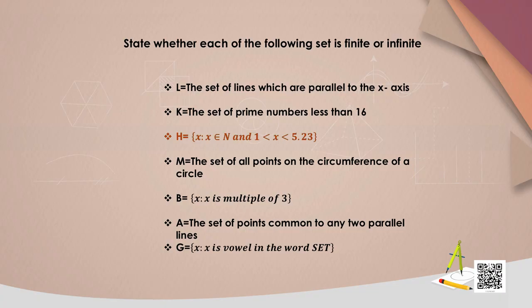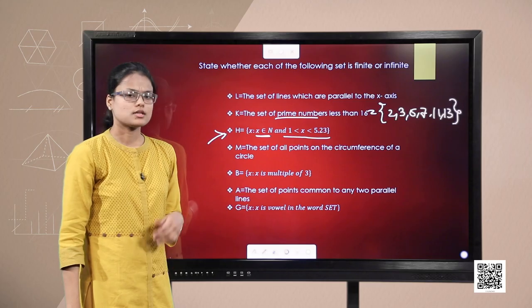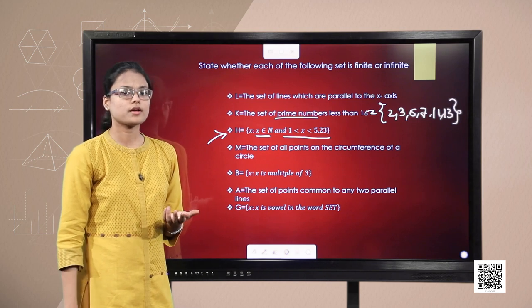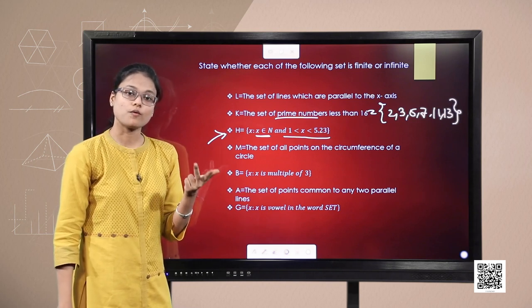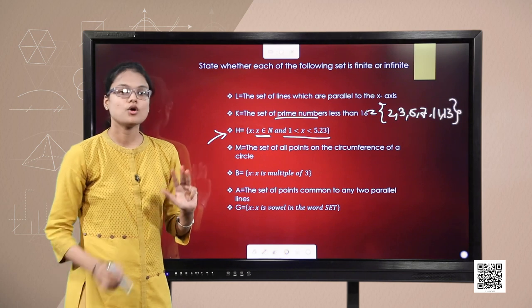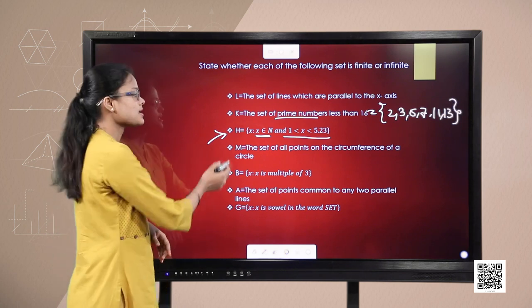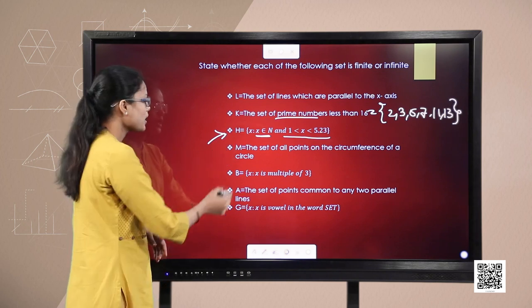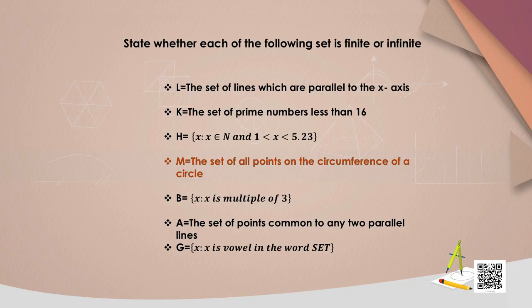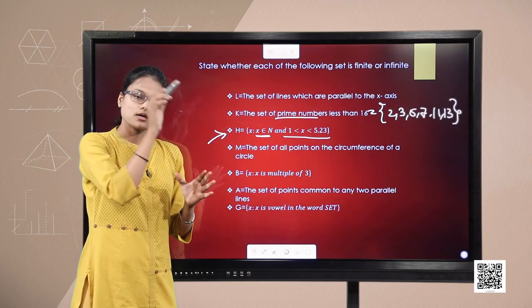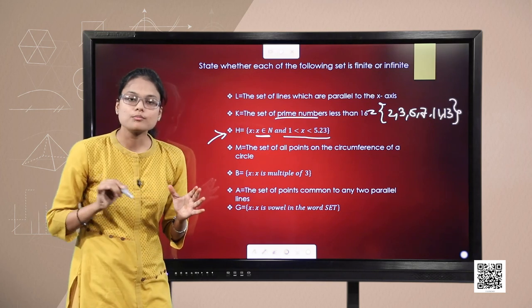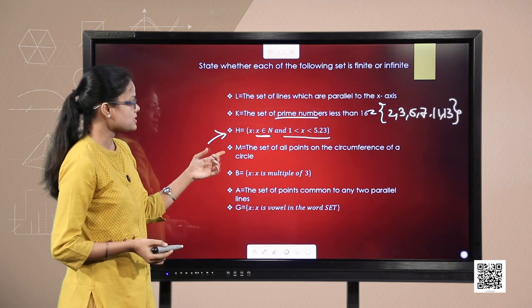Set H consists of all natural numbers lying between 1 and 5.23 — those are 2, 3, 4, and 5. Four numbers, so H is a finite set. Set M is the set of all points on the circumference of a circle. On a circumference, there are infinitely many points, so set M is an infinite set.